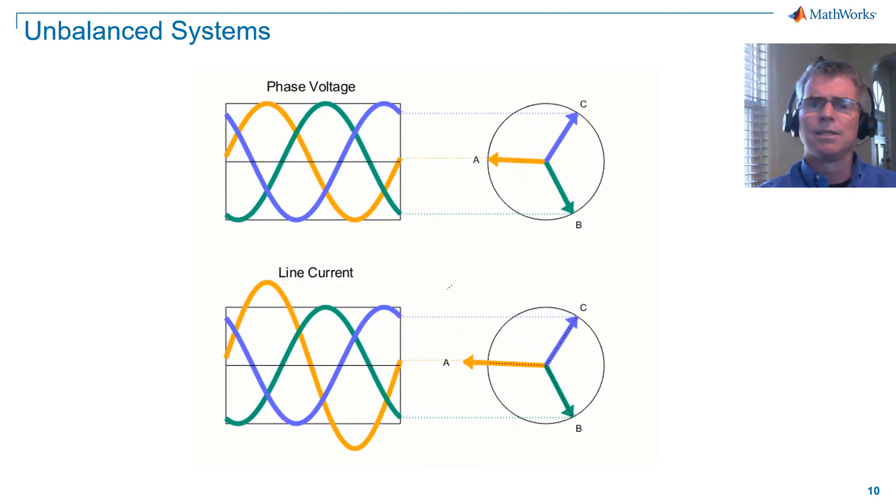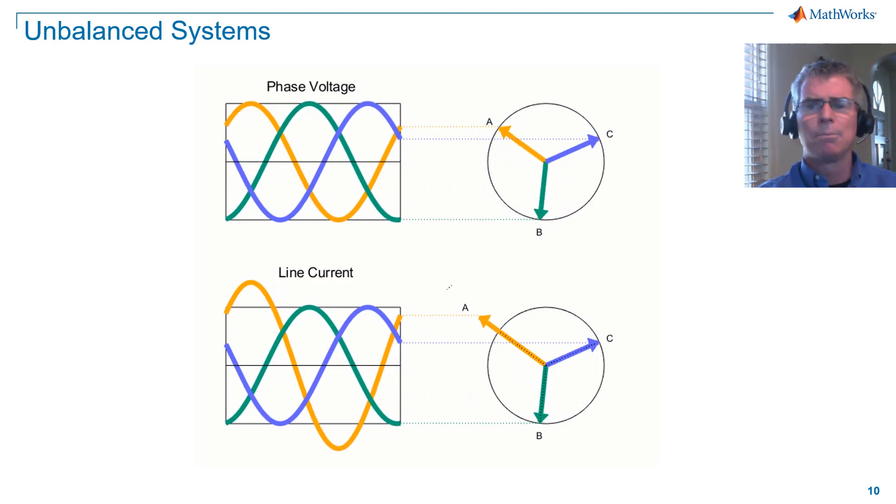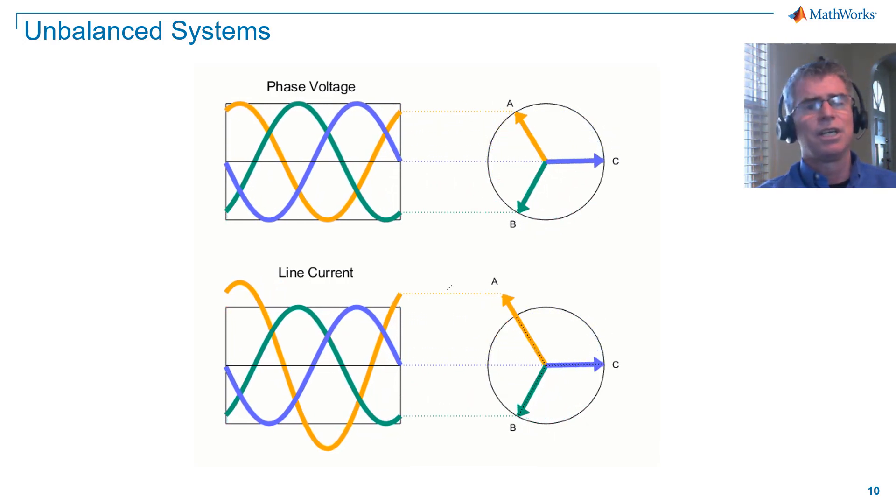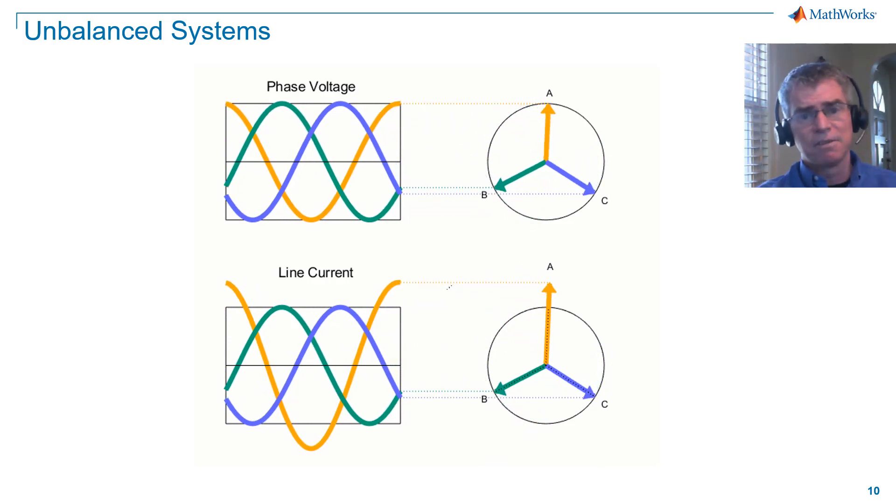In practice, imbalances in both voltage and current may occur, and imbalances can manifest as changes in magnitude as well as changes in phase.